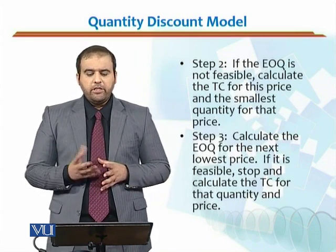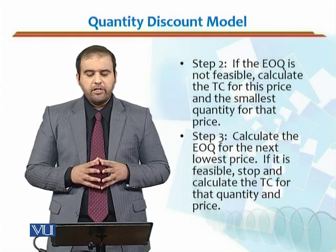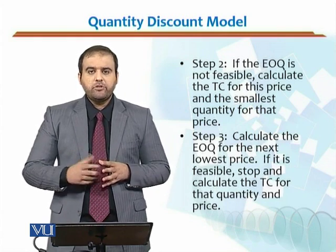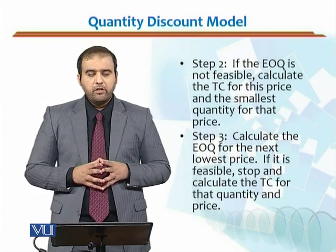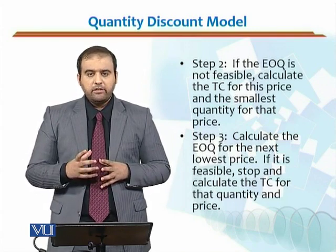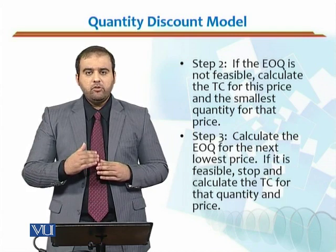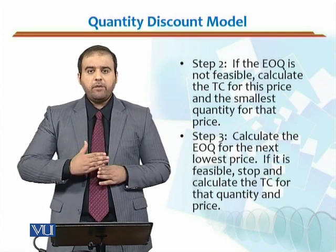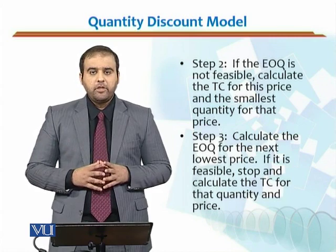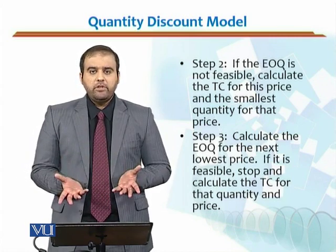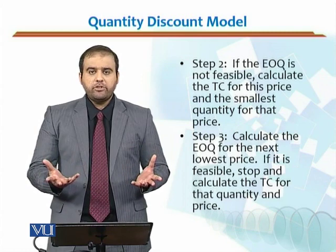Step two: if the EOQ is not feasible — if it doesn't fall in the required range — calculate the total cost using that price but at the smallest feasible quantity for that price slab, then move forward. Step three: find the EOQ for the next price, calculate its total cost, and compare. Keep moving forward until your EOQ becomes feasible. Once feasible, stop, find the total cost, compare with previous values, and the quantity with the lowest total cost is your optimal lot size.